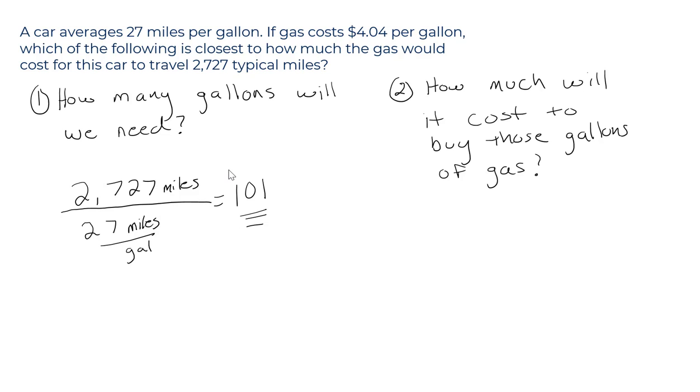Step two, how much will it cost to buy that gasoline? Well, we take 101 gallons. I'll even write the units here, gallons, times $4.04 per gallon. And what do we have here?